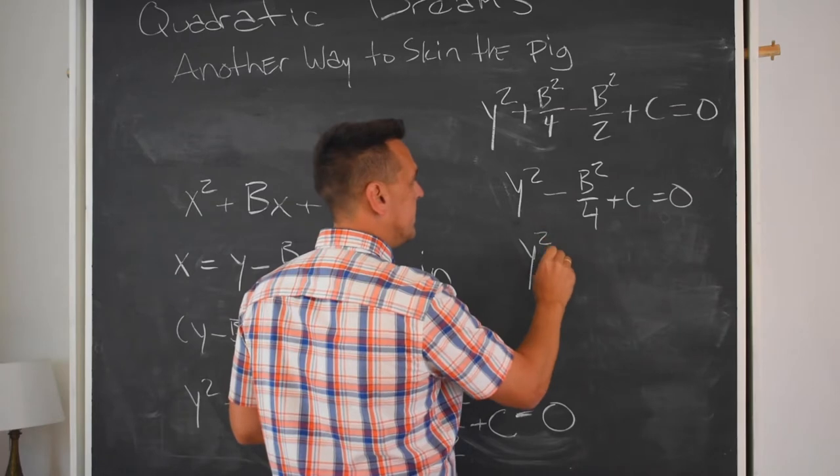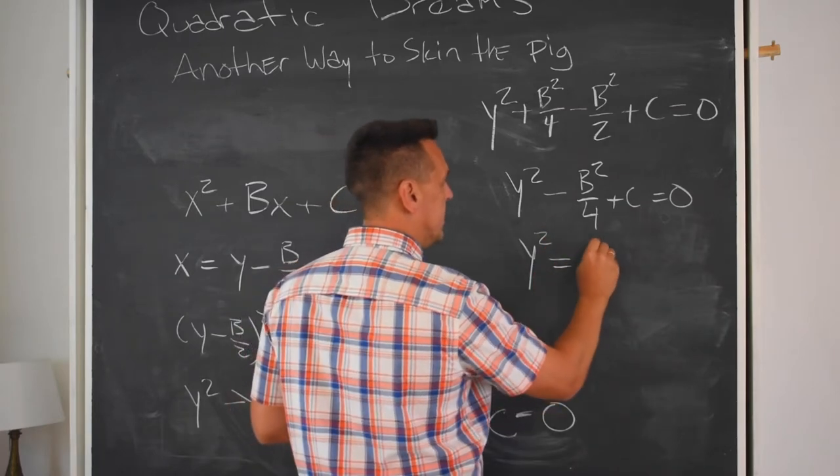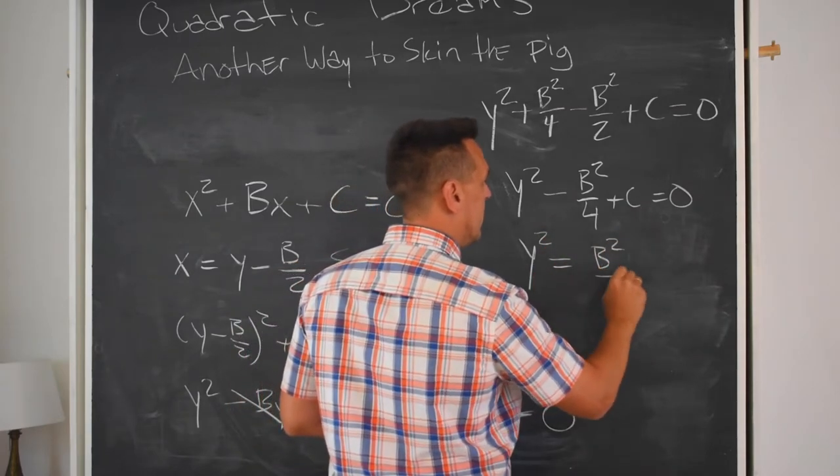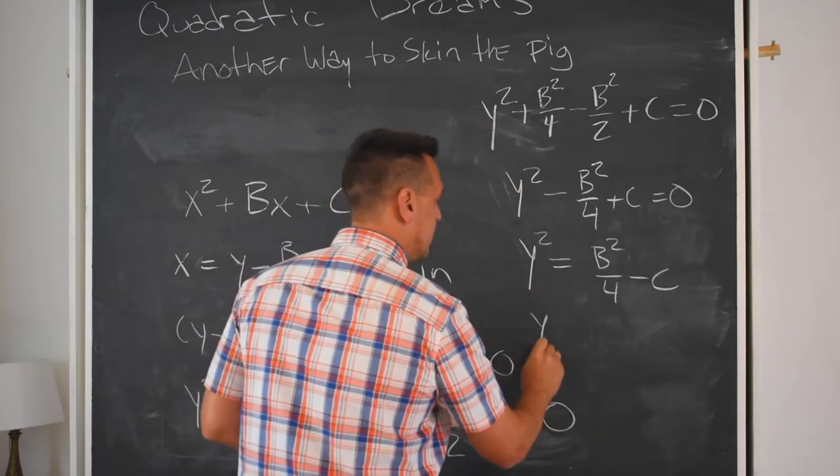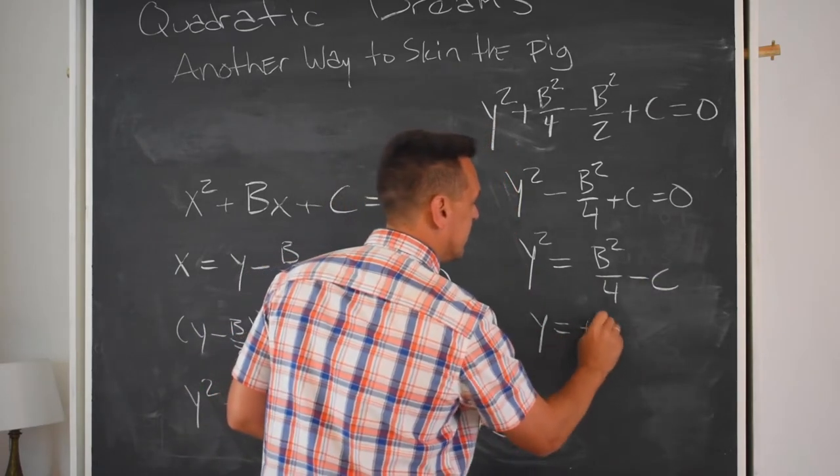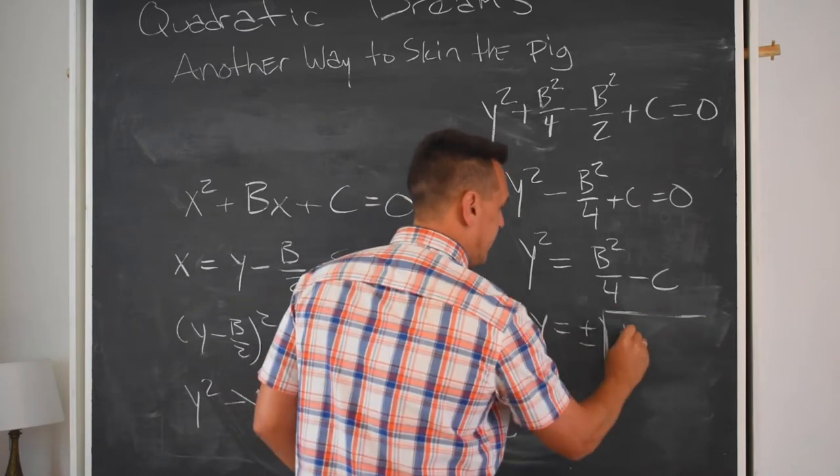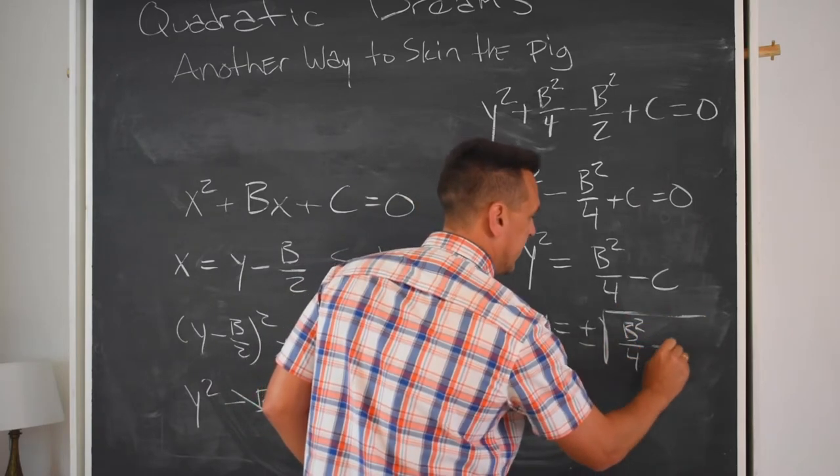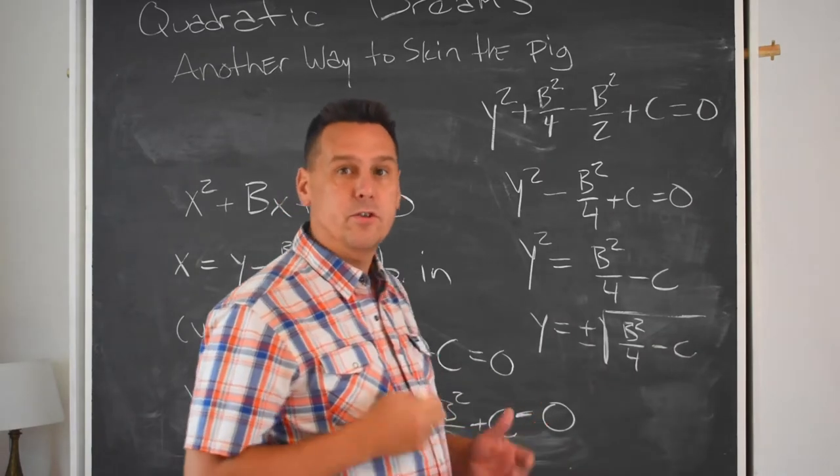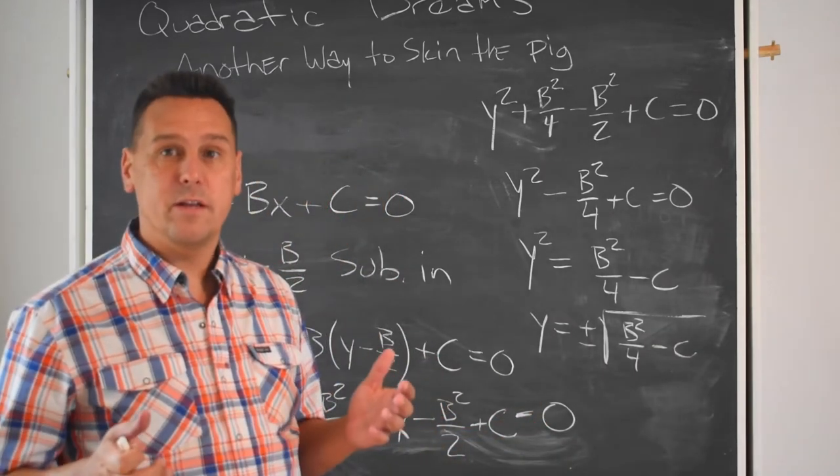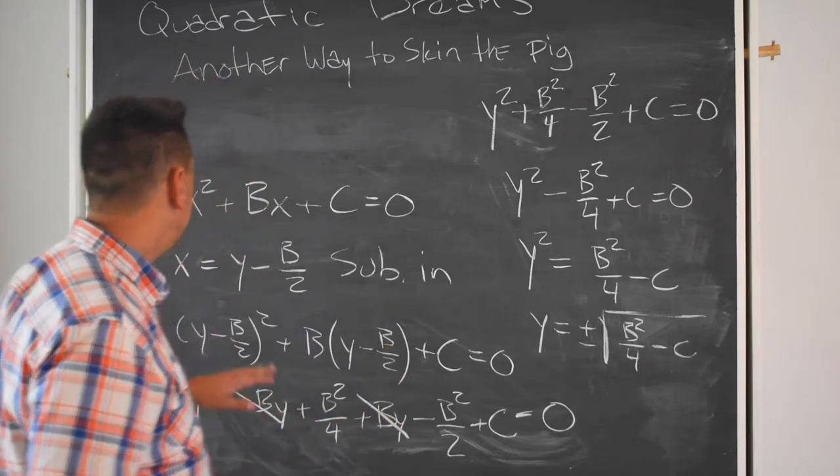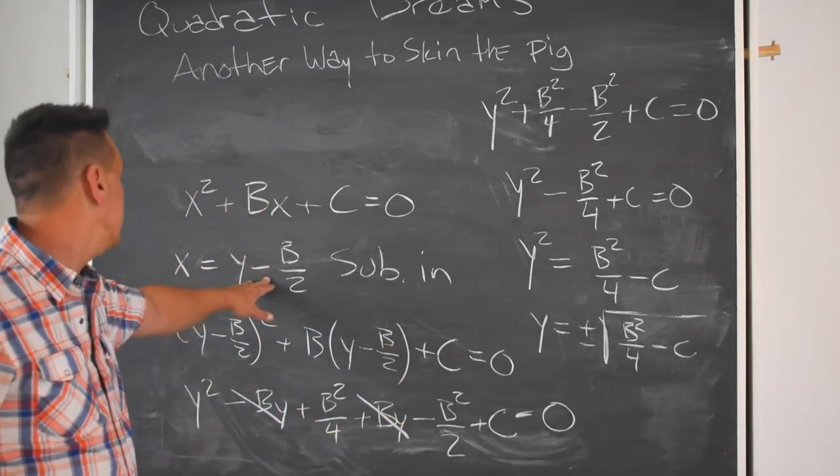So I've got y squared minus b squared over 4 plus c equals 0. Or, once I start putting things on the right side of the equation, this is b squared over 4 minus c. And take the square root: y equals plus or minus the square root of b squared over 4 minus c. And there's my solution to the quadratic equation. I didn't have to complete the square. I didn't have to do anything crazy with geometry. I just made this very simple substitution here.